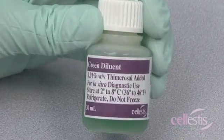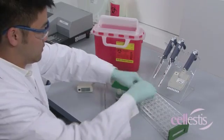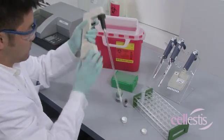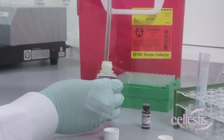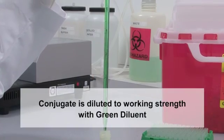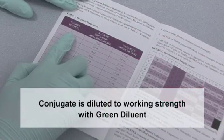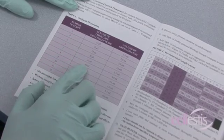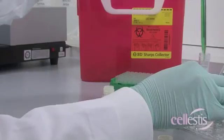Prior to performing the ELISA, sufficient working strength reagents need to be prepared. The conjugate is 100 times concentrated and needs to be diluted to working strength using green diluent. The package insert indicates the appropriate volumes to be prepared for the number of ELISA plate strips required.